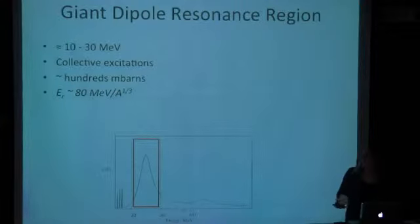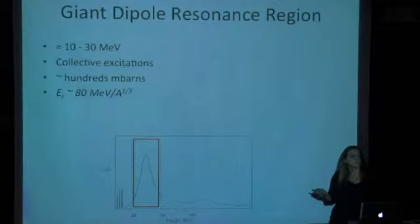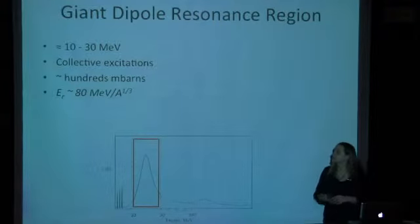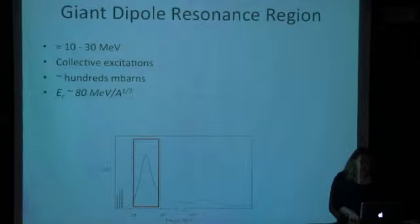The collective excitations which happen are called collective because it's basically an oscillation of neutrons against the protons, a dipole. The cross-section is very high in this region, hundreds of millibarns. Sometimes it gets closer to a barn, which is pretty large. The energy of the resonance, the peak energy, is inversely proportional to the cube root of the atomic number. The reason is because the energy is inversely proportional to the wavelength. Wavelength is comparable to radius, and radius is proportional to A^(1/3). So there is this formula that allows you to roughly estimate what is the energy of the peak of the resonance.